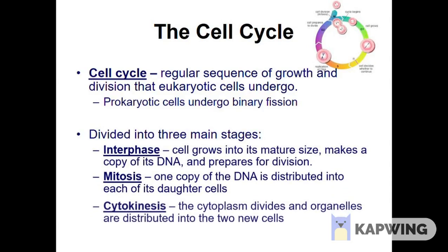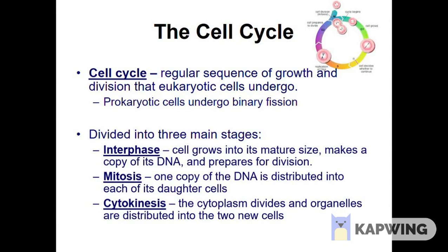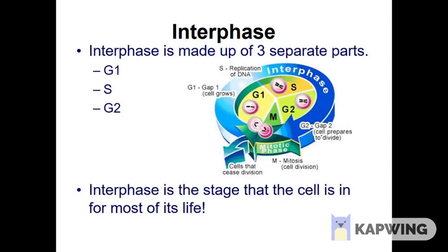So the cell cycle has three main stages: one is interphase, another one is mitosis, and another one is cytokinesis. Interphase is the phase where the cell actually lives its life for what it is born for. Mitosis is the cell division process, and cytokinesis is where the cytoplasm is going to get divided into two. Let's see each process in detail.